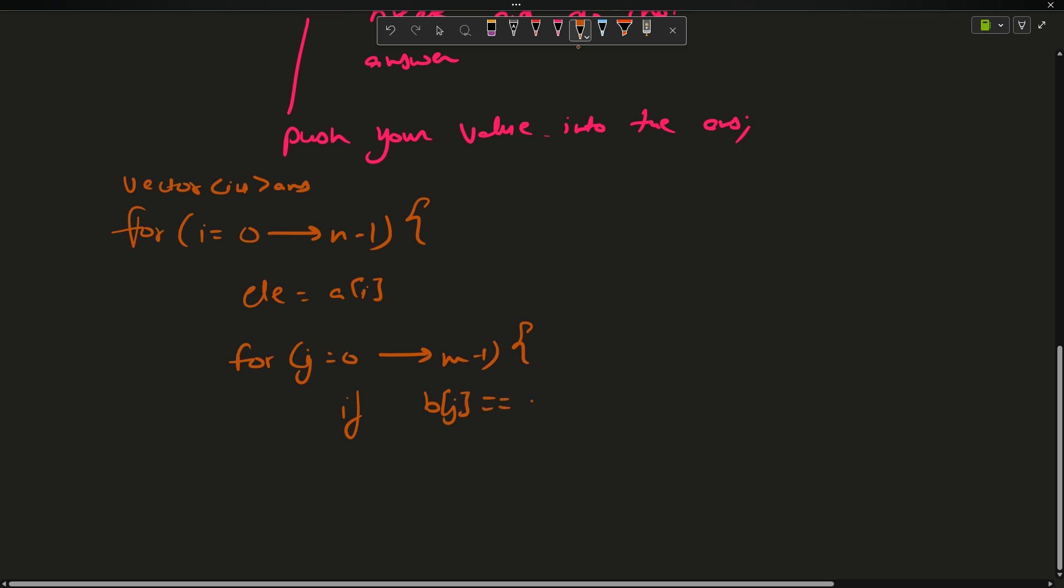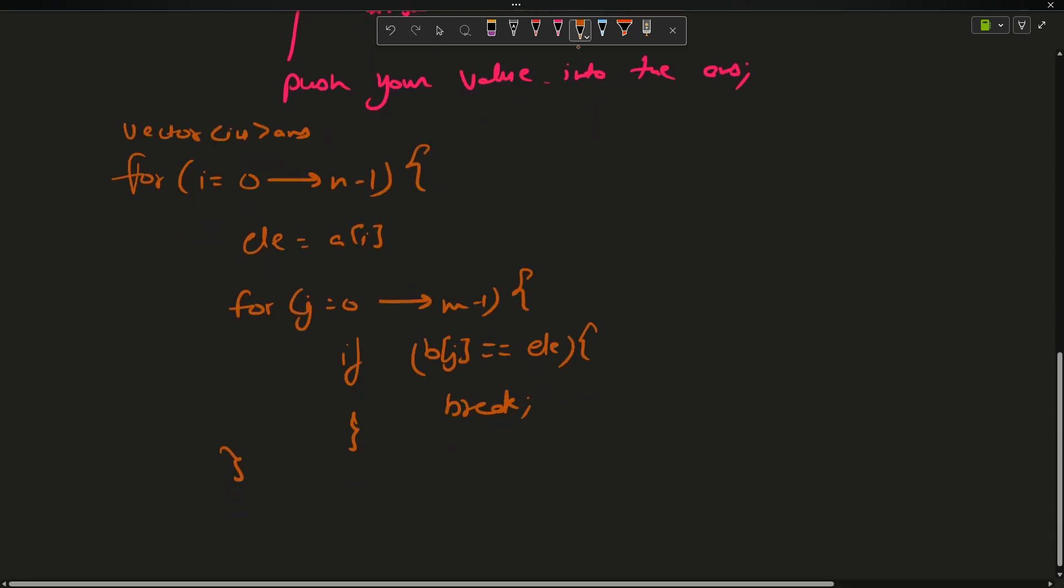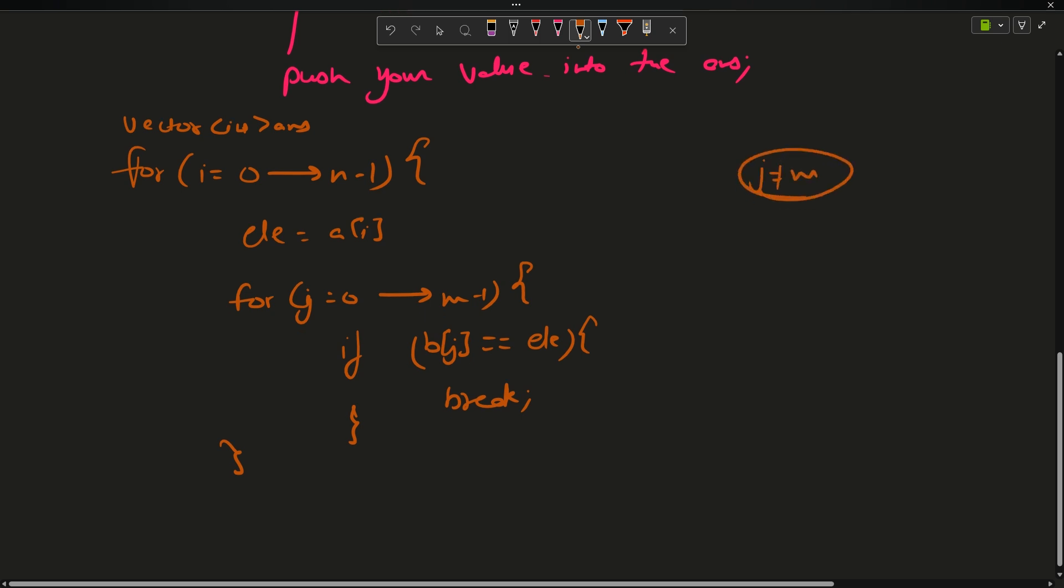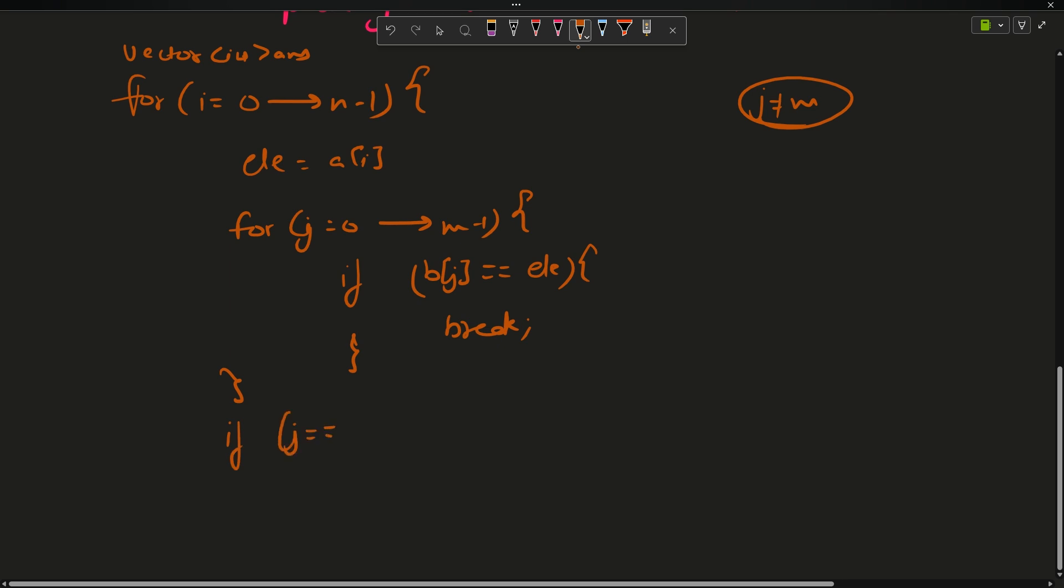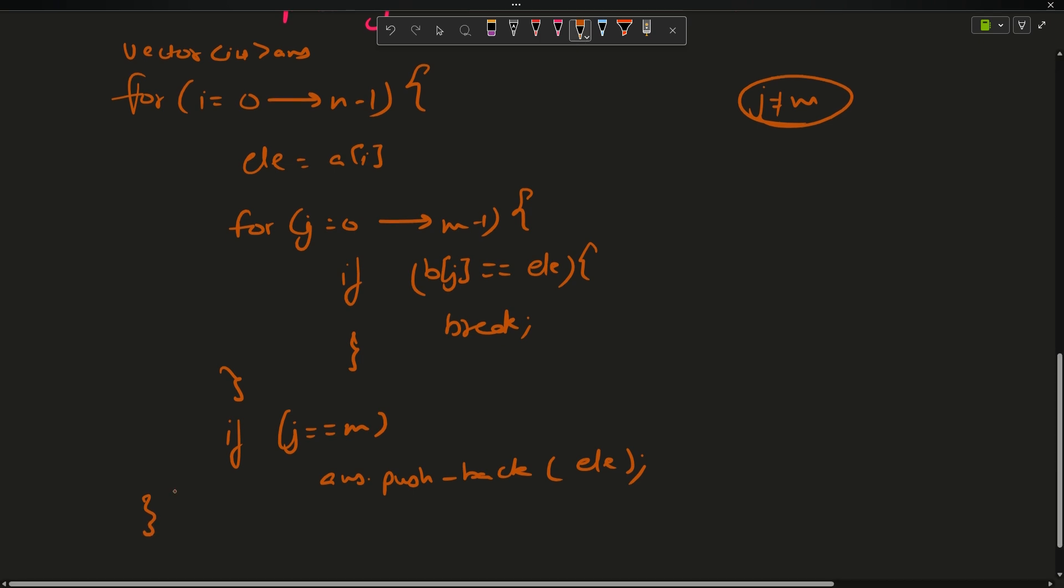If B[j] equals A[i], in that case break. If the loop has broken in between, then j will never reach m. So if j equals m, in that case answer.push_back(A[i]) and move forward. Return answer after both loops are ended.